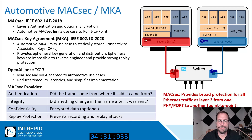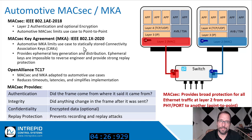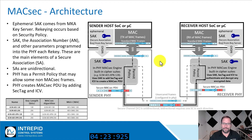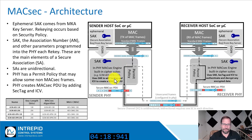MACSEC defines the security at layer two and MKA defines how to deliver ephemeral keys. Automotive Ethernet PHYs support MACSEC with a built-in MACSEC engine that does most of the heavy lifting with AES cipher suites.